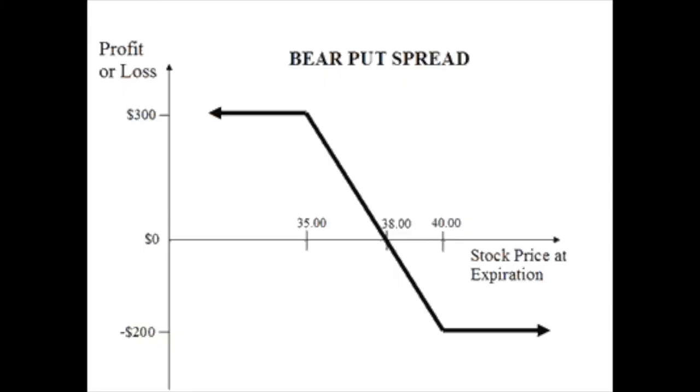The fourth strategy is the bear spread — same concept but betting the price will go down. You buy a put option and sell a put option at a lower price, with the same expiry. Like the bull spread, your losses are limited and your maximum profit potential is limited, but you reduce the amount of premium paid.